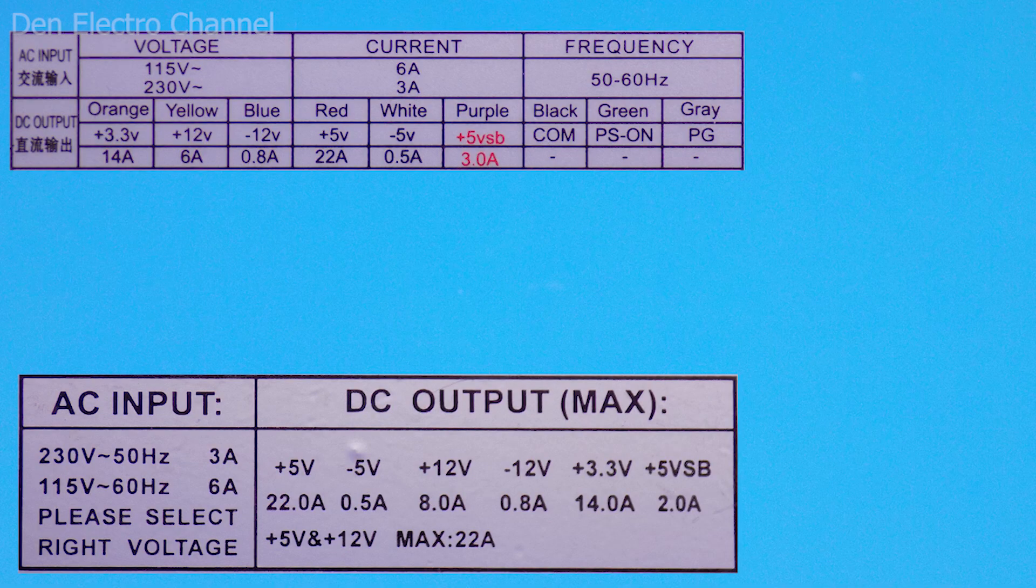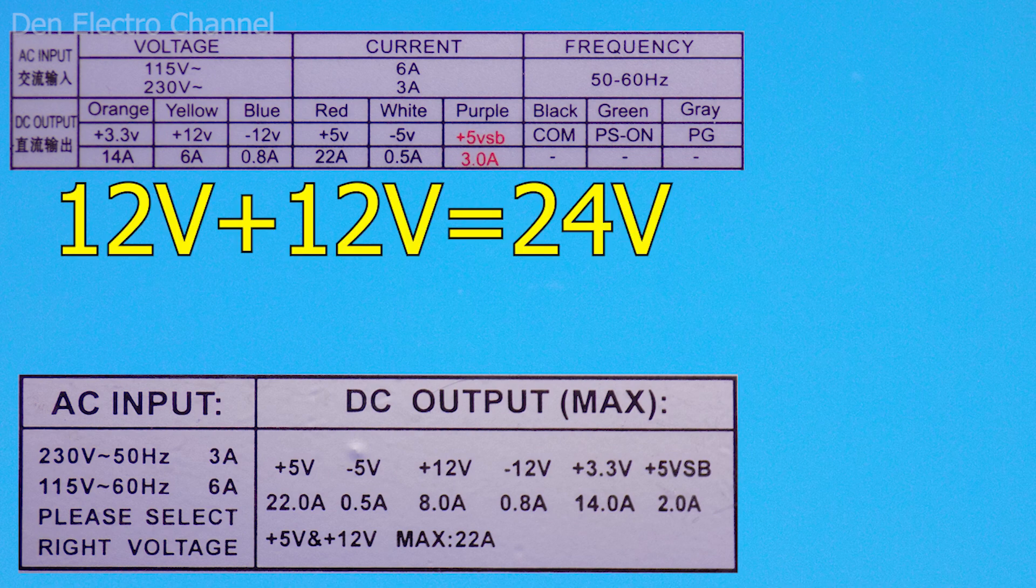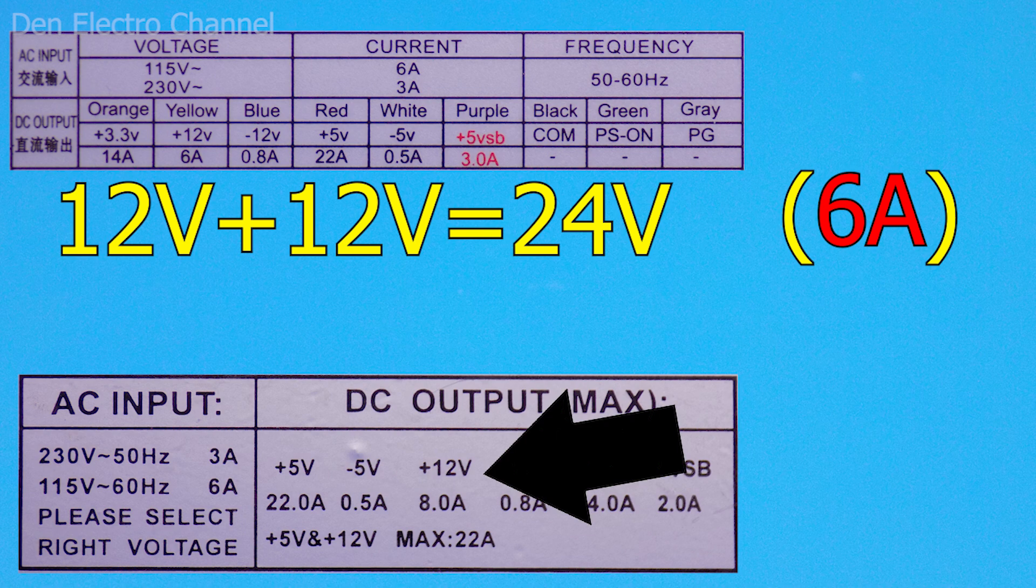Such power supplies can be connected both in series and in parallel. In the first case, we will be able to get a higher voltage, we will make 24 volts. But the maximum current will be limited by the weakest power supply. Please note, here on the 12 volt line there are 8 amps and here only 6. You can load more, but the voltage will sag.